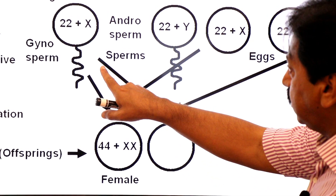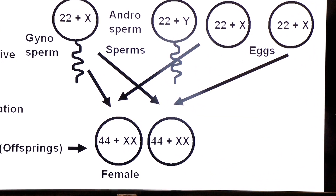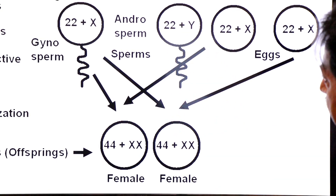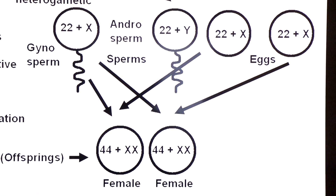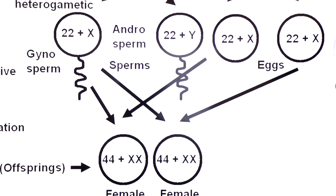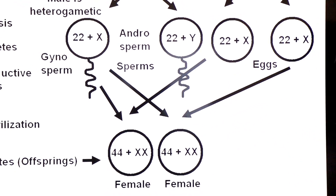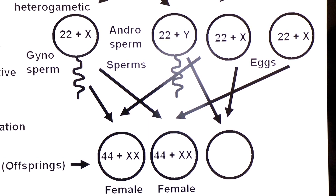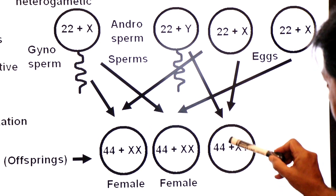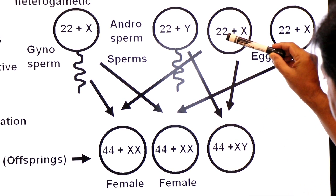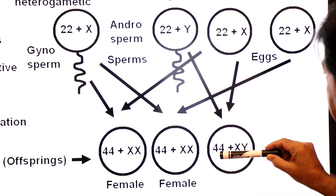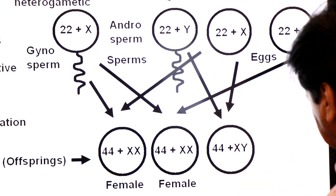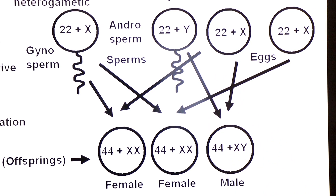When the gynosperm fuses with the egg, the combination is 44 plus XX and the embryo will be female. When the androsperm fuses with the egg, the zygote will be 44 plus XY — 22 autosomes from the sperm and 22 autosomes from the ovum, Y from the sperm and X from the egg — so androsperm determines a male individual.